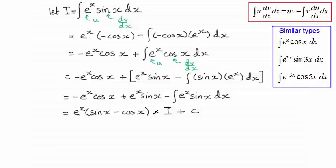Now all I need to do is add I to both sides, so therefore I have 2I equals e to the power x, sine x minus cosine x, and plus that constant of integration c. And so to get the value of the integral I, all I need to do is divide both sides by 2.